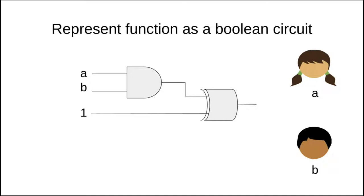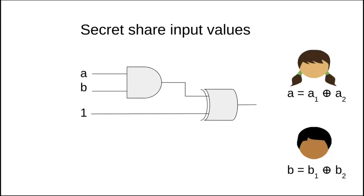Let's start with a simple circuit. For simplicity we consider only two parties, Alice and Bob, but the extension to arbitrary number of parties is immediate. Alice holds input A and Bob holds input B. Alice secret shares her input A by uniformly sampling A1 and computes A2 such that A1 and A2 add to A. Symmetrically, Bob secret shares his input B.